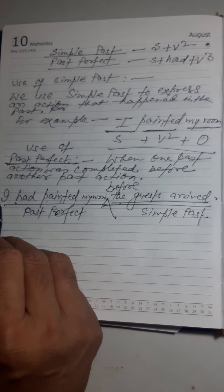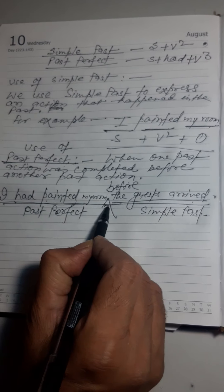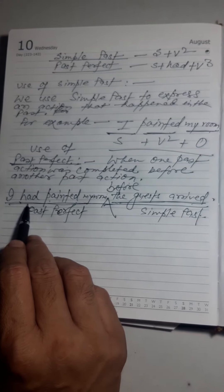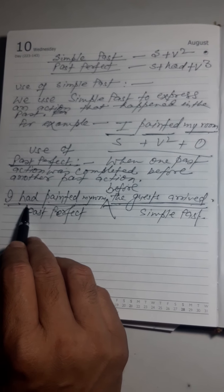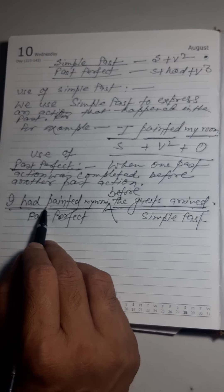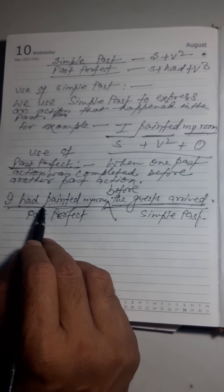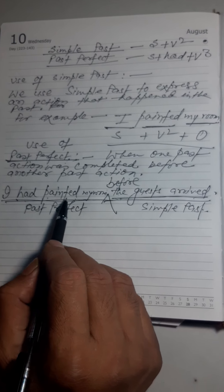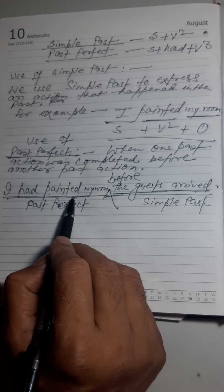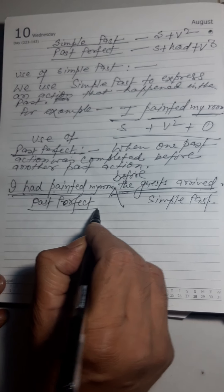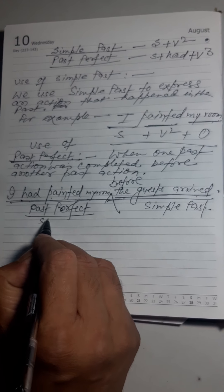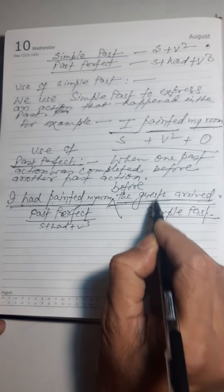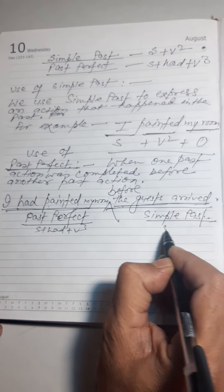Two actions happened. 'I had painted my room' and 'the guest arrived.' Which one was done earlier? 'I had painted my room' was done earlier. The earlier action is written in past perfect — subject plus had plus V3. The later action is written in simple past — subject plus V2.